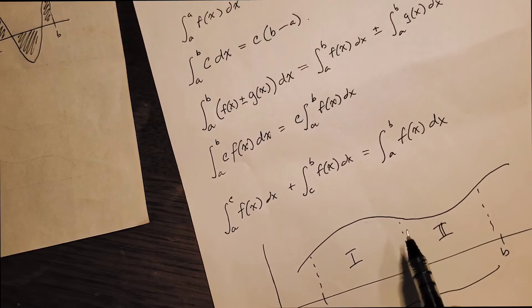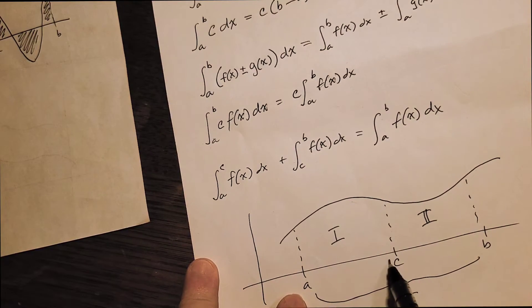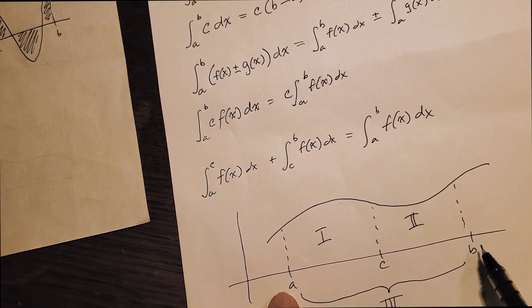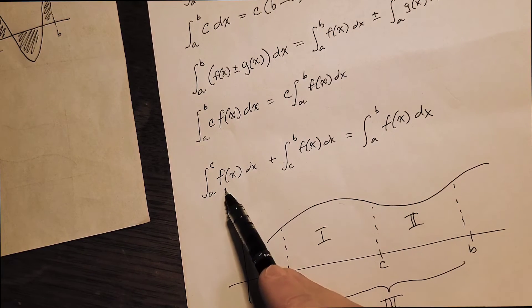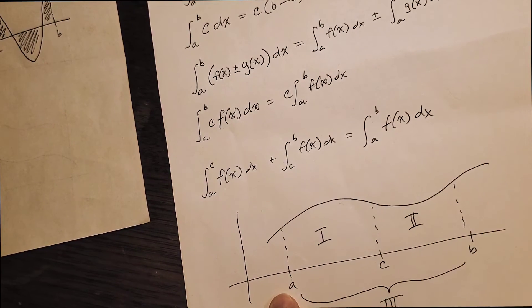So as I've drawn it here, this is just saying if you add this area, the integral from a to c, plus the integral from c to b, you end up with a to b. Integral from a to c is region one, region two, you end up with region three, the combination of both of them.